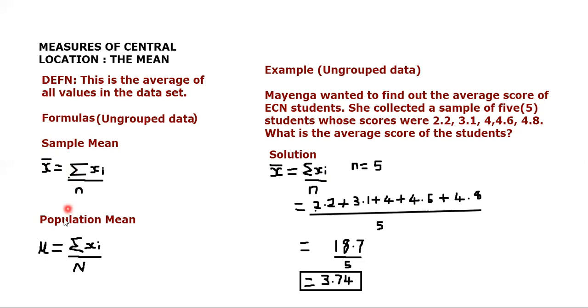When it comes to the population mean, it's represented by mu. Mu is equal to the summation of Xi over capital letter N. This is very important: for the sample mean you put a small letter n, for the population mean you put a capital letter N.